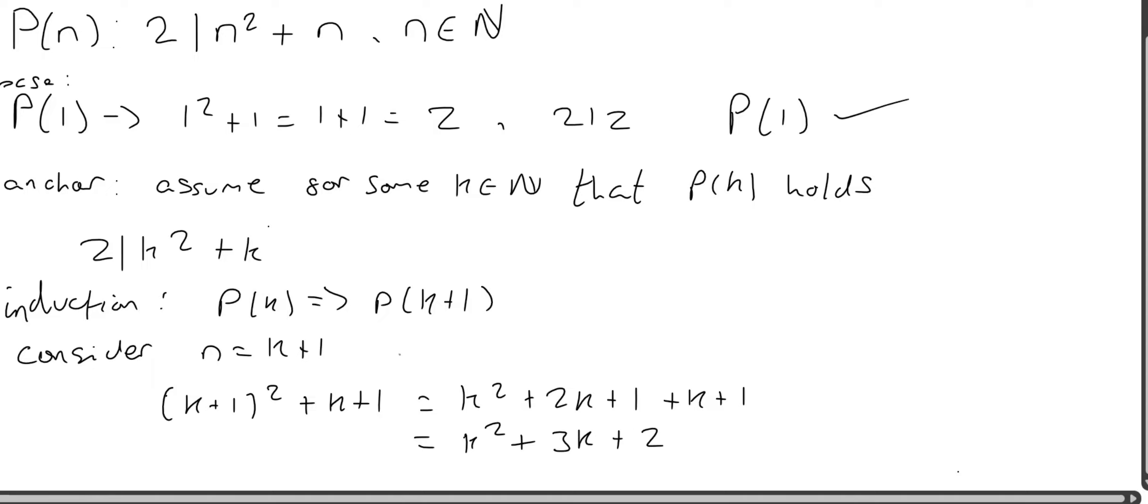Now we want to rearrange this into a form so that we can use the fact that P(k) is true to show that P(k+1) is true. So we can write this as k squared plus k, and then what we have left is plus 2k plus 2. And this here, 2 divides this, and that's from P(k). And this bit clearly divides 2 because it's 2 multiplied by some natural number. So we've got the sum of two things that are multiples of 2, divisible by 2. Therefore, this whole thing is divisible by 2. So in this step, we've shown that P(k) does indeed imply P(k+1).